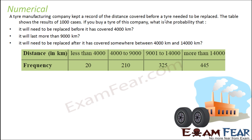This is a tyre manufacturing company that kept the record of the distance covered before a tyre was replaced. This table shows the data for 1,000 tyres. If you buy a tyre of this company, what is the probability that it has to be replaced before it covered 4,000 kilometres, more than 9,000 kilometres, and somewhere between 4,000 and 14,000 kilometres?